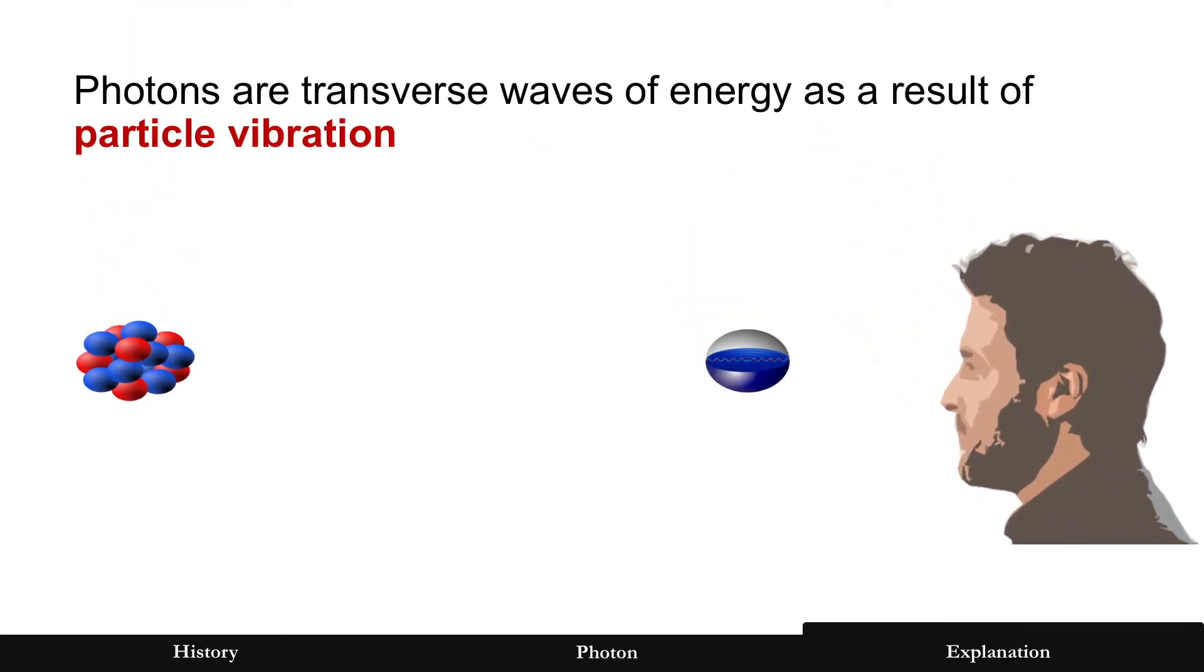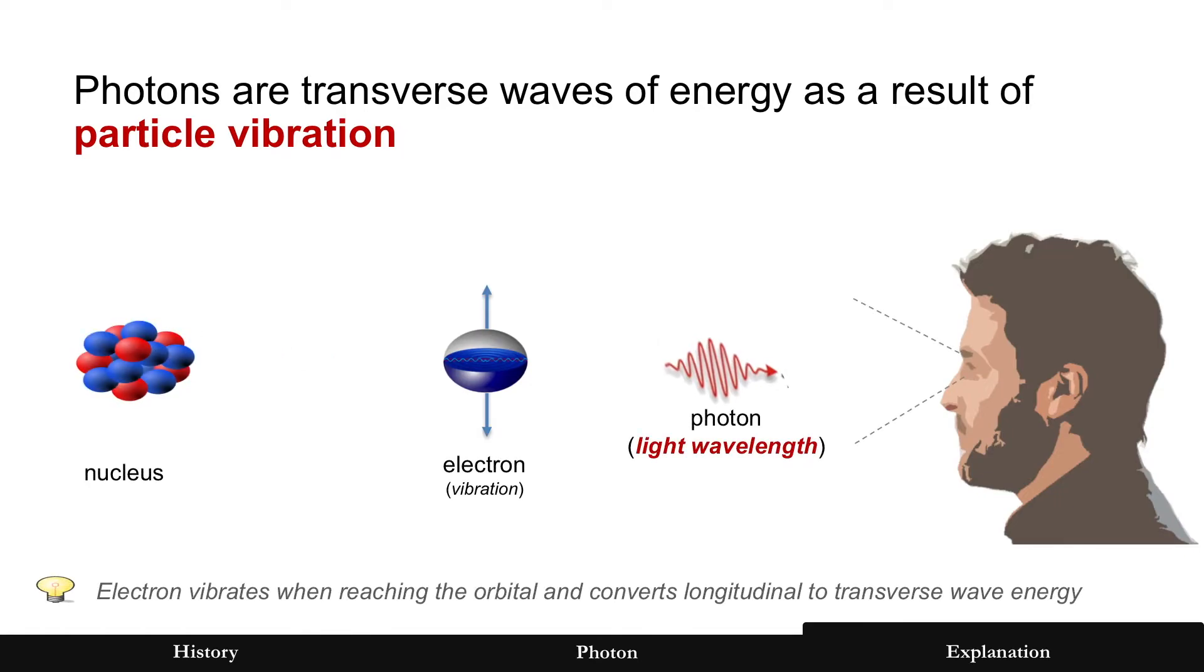Let's try to get something simpler that matches experiments. Photons are really transverse waves of energy as a result of particle vibration. Again, the typical explanation is where an electron moves closer to the nucleus of an atom and generates a photon.